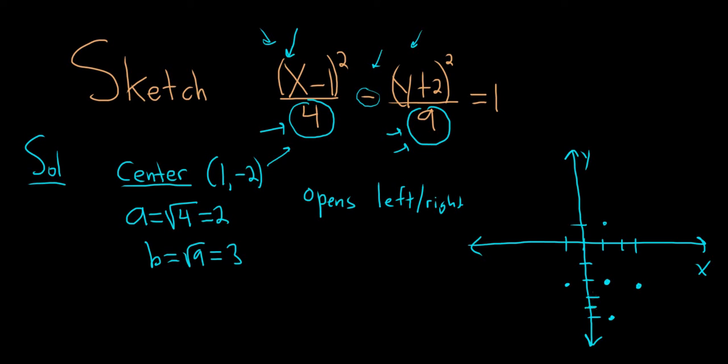So again, because it opens left and right, we go left and right by a. If it opens up and down, then you go up and down by a, and then the other direction by b.